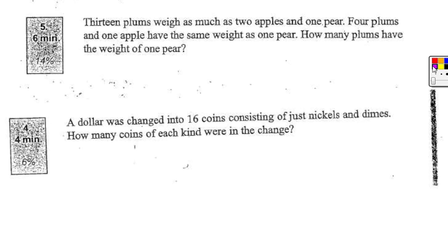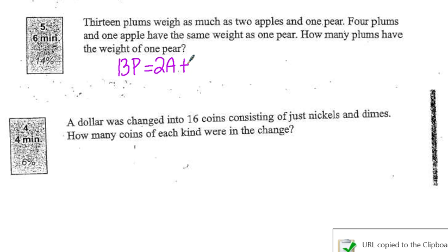So what I'm going to do is set up some equations. I have 13 plums, so I'm going to represent that as 13p, and that is equal to two apples, or 2a, plus one pear. I've already used p, I'm going to use r for pear, so is equal to 1r.